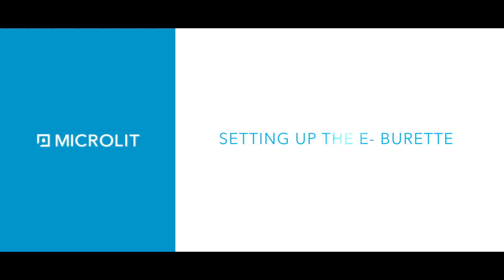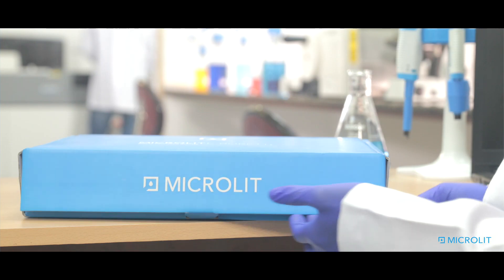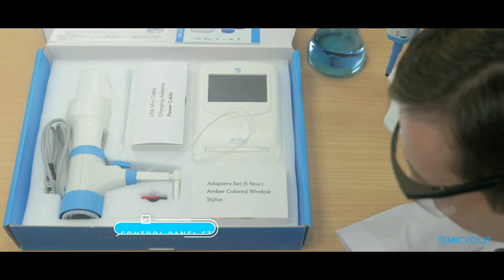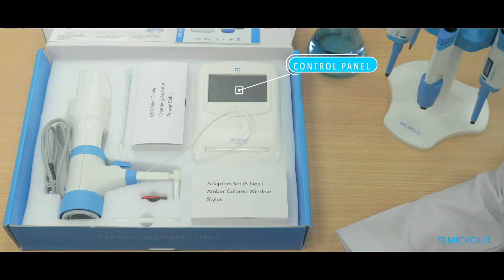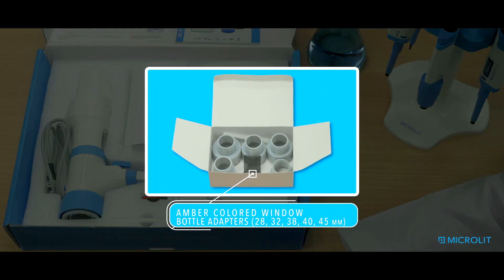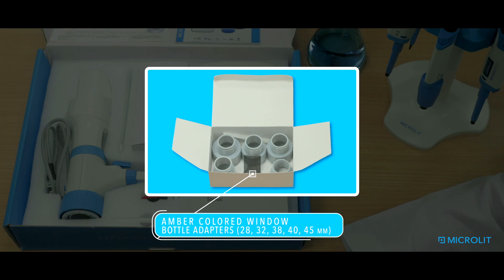Setting up the eBuret. Microlit eBuret comes with modern accessories, like a sleek handheld stylus to perform touch operations on the control panel with ease, and an amber-colored window which can be swapped with a transparent acrylic window for use with chemicals or reagents that are sensitive to light.